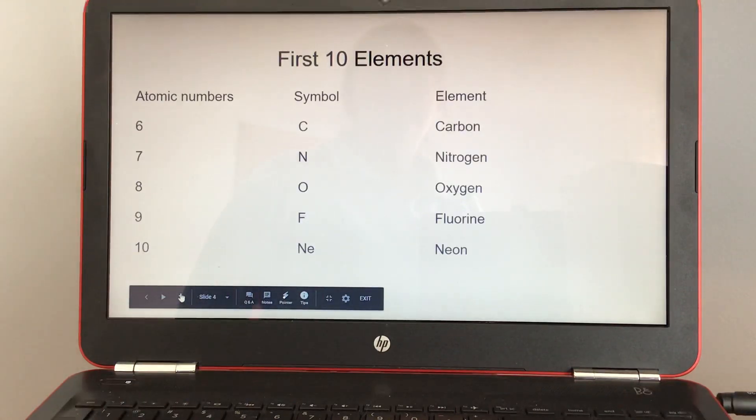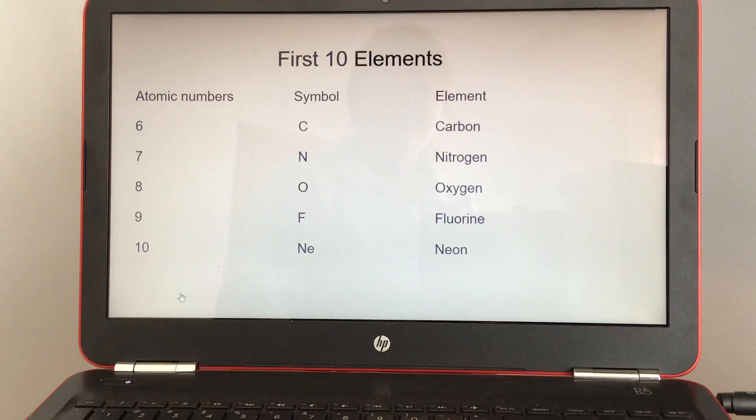And then number six, the symbol is capital C for carbon, and we just went over the carbon cycle as well. Atomic number seven is capital N for nitrogen, and the nitrogen cycle as well.